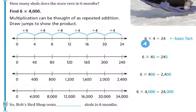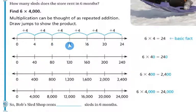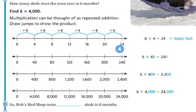So if you're looking at this, we have our basic fact of 6 times 4. I'm jumping each time by 4, and I'm going to jump that 4 six times: 1, 2, 3, 4, 5, 6. Each time I jump, I'm adding 4. Jump once — 4. Jump twice — 4 plus 4 is 8. Jump again — 8 plus 4 is 12. Jump again — 4 plus 12 is 16. Jump again — 4 plus 16 is 20. Jump one last time — 4 plus 20 is 24. So 6 times 4 is 24.